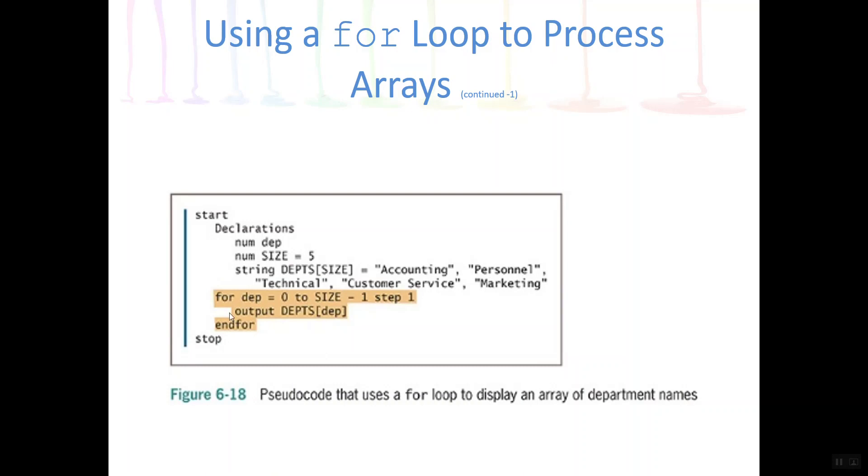Similar to the last example, we use a for loop to iterate through. But instead of adding things up, this time the purpose was we wanted to loop through and output each department name. So we wanted to start with the first one and output accounting, then personnel, and so forth. So we set department up here to zero. This is similar to my index in the last example. Again, remember it doesn't matter what you name this variable, as long as it's a numeric variable. We started it at zero, and we went to size minus one. Size minus one is four. So this is really saying start DEP at zero and go to four.